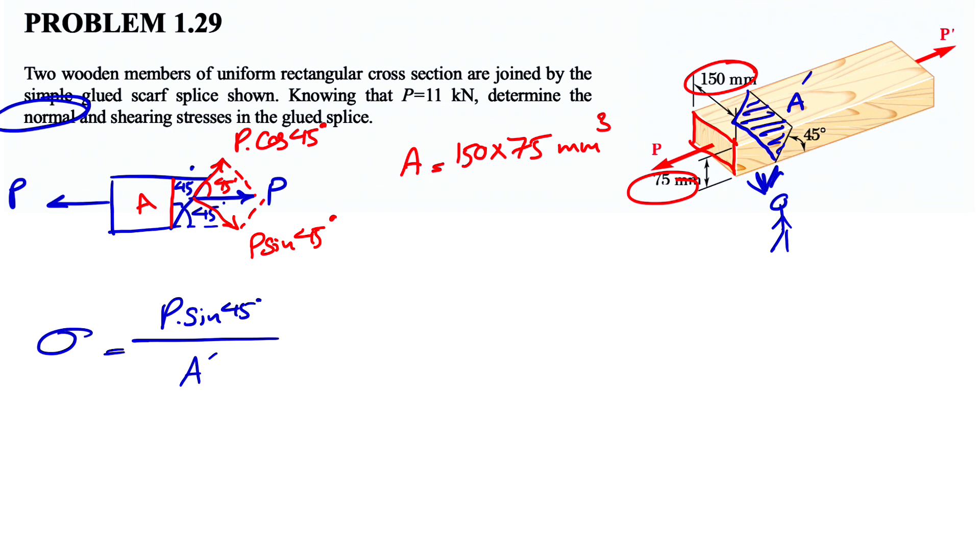If we want to find the area of A prime, I'm going to show it here. We have this right triangle here. This surface is A, and we are looking for A prime. So here we are looking for the relationship between A and A prime, since we already have A. If you find the cosine of 45 degrees, what we're going to get is basically the adjacent, which is A, over the hypotenuse, which is A prime.